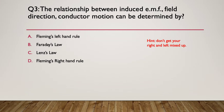Here's your hint: don't get your right and left mixed up. So which one is it? The answer is Fleming's right hand rule. This rule demonstrates the relationship between the induced EMF, the field direction, and conductor motion, and can be determined using that right hand rule.